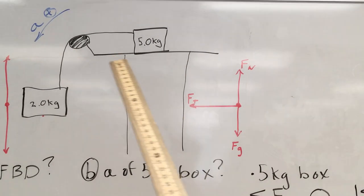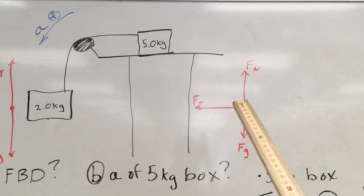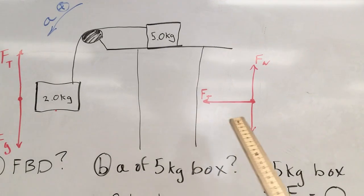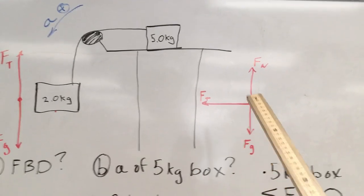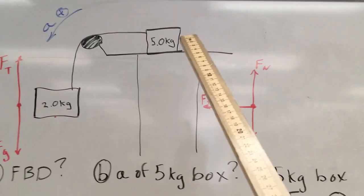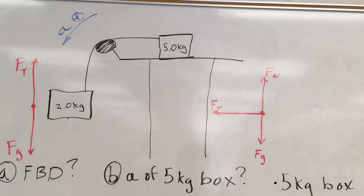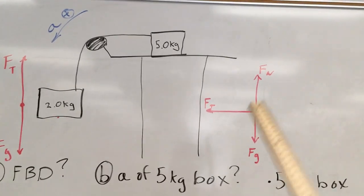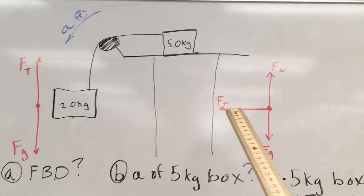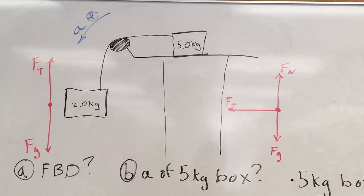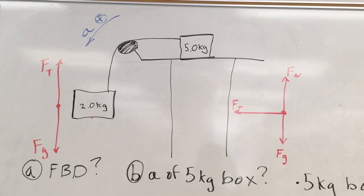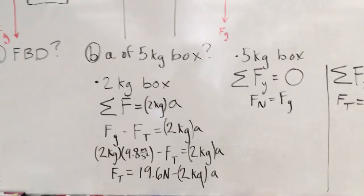For the five kilogram block, we have a few more forces at work because there is a table. The table will supply a normal force to prevent the block from falling through. Gravity is still acting downward. However, the problem specifies the table is frictionless — apparently it's made of ice — so we don't need a force of friction. Instead, we just have the force of tension pulling it to the left.